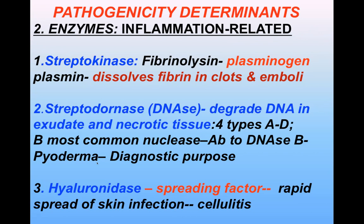The first important inflammation-related enzyme is streptokinase, which is a fibrinolysin. It activates plasminogen to form plasmin, which dissolves fibrin in clots or thrombi. It is used clinically in the treatment of coronary artery thrombosis and venous thrombosis.